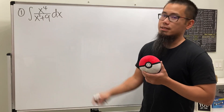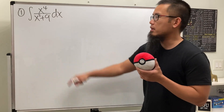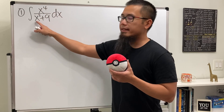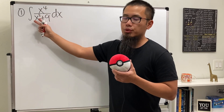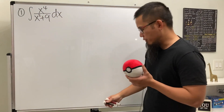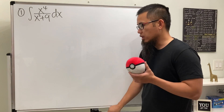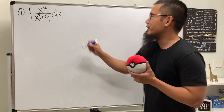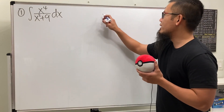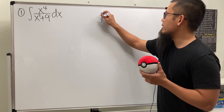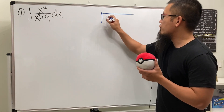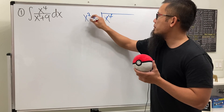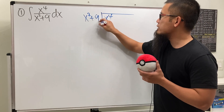The way to do this is not so bad because we notice the degree on the top is four and the degree on the bottom is two, so we can actually just do long division before we proceed. Let's go ahead and do the long division right here — we need to put x to the fourth power inside and then x squared plus nine on the outside.